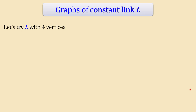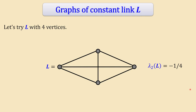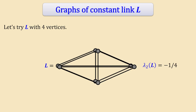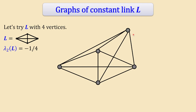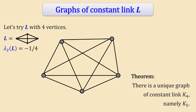Let's try L equal to the complete graph K4 on four vertices. Its lambda_2 is negative 1/4, even better than 1/2. But by the same reasoning, the unique graph of constant link K4 is the complete graph K5 on five vertices. Again, we get only a single graph, not a family.